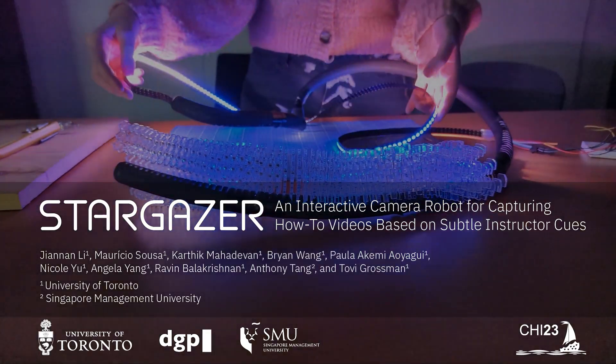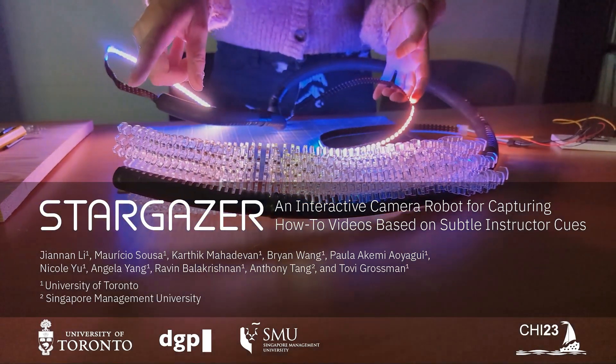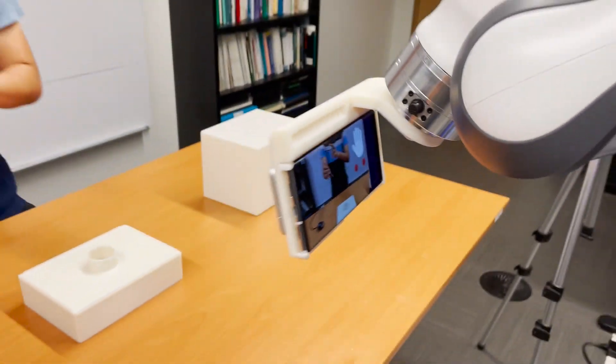In this video we present Stargazer, an interactive camera robot for capturing how-to videos based on subtle instructor cues.